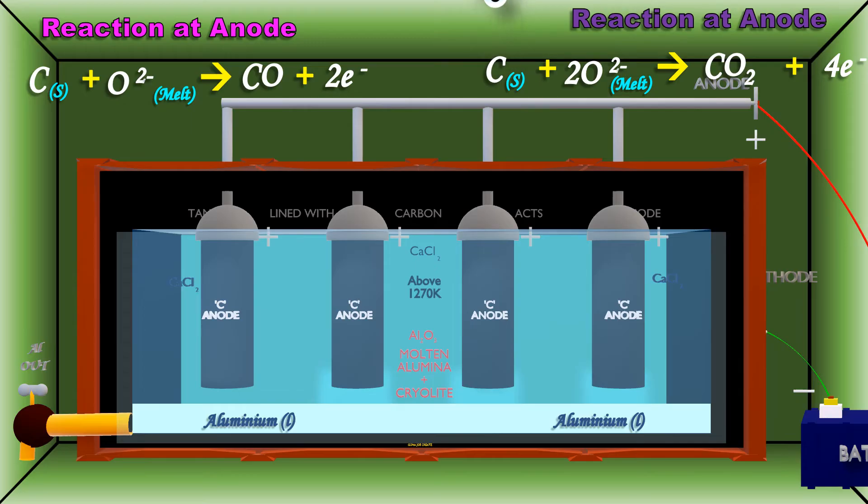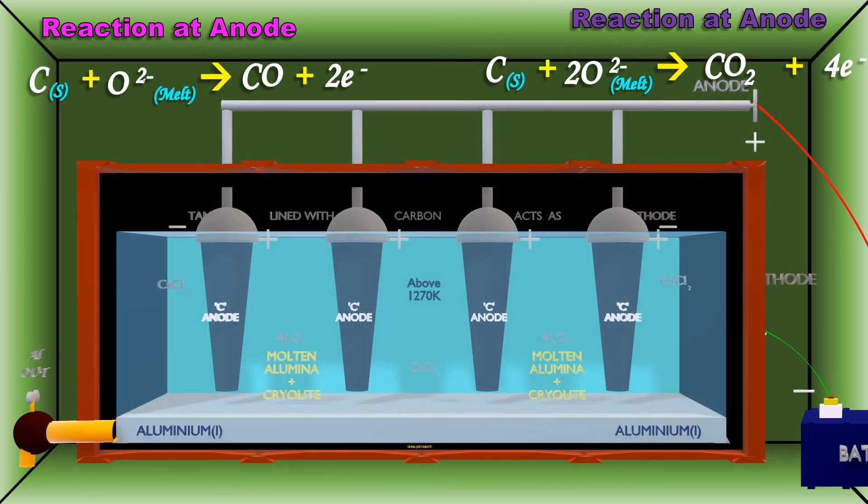Due to these reactions, anodes are slowly consumed during the electrolysis.